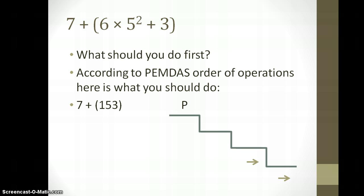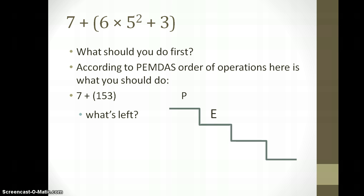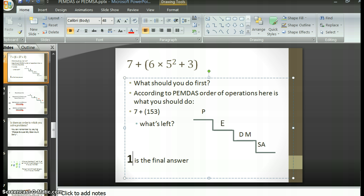According to PEMDAS, you should get 153. Finally, what's inside the parentheses is solved, and we can go outside the parentheses. 7 added into 153 is 160. That's all that was left. Left to right. 200 is not the final answer. It should be 160. Let's fix that. 160.